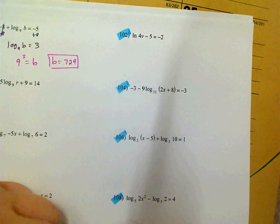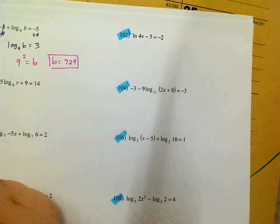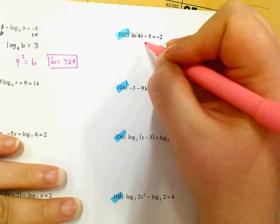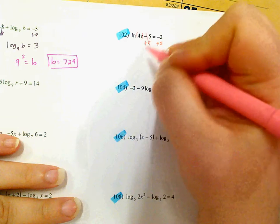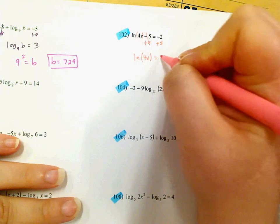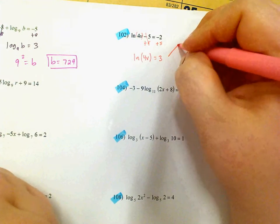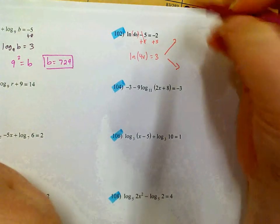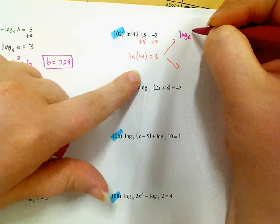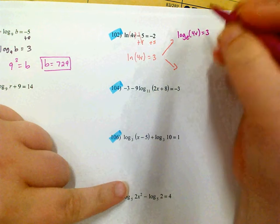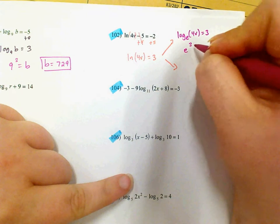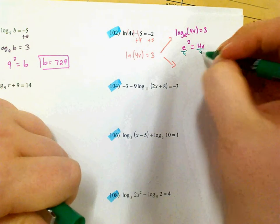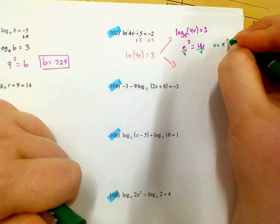On 102, again we're trying to solve for the variable, which is by the natural log. I want to undo the subtraction first, so I'm going to add 5, and I'm left with a natural log of 4v equals 3. The easiest way might be to rewrite it as log base e of 4v equals 3, then convert. When you convert to an exponential, you say e to the 3rd equals 4v, and then just divide by 4, getting v equals e cubed divided by 4.